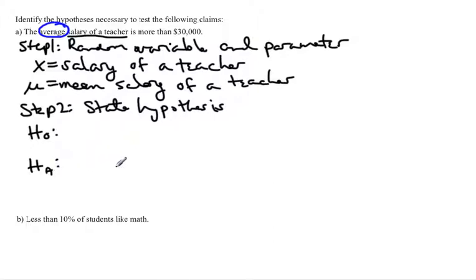Hₐ is what we're trying to actually prove. So in this case we're trying to prove that the average salary of a teacher is more than $30,000. So mu was our symbol for the average salary of a teacher. And we want to show that it's more than, which would be greater than $30,000. So that would be your Hₐ. I usually figure out Hₐ first and then H₀ is just with an equal sign. And there is setting up that hypothesis. So let's move on to the next one.